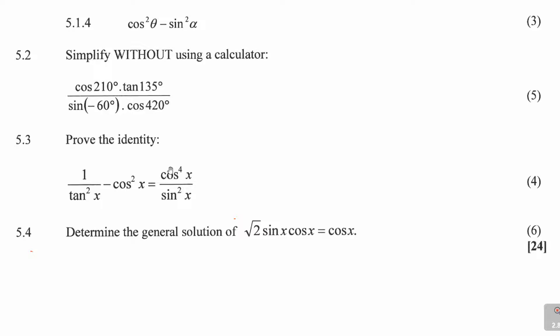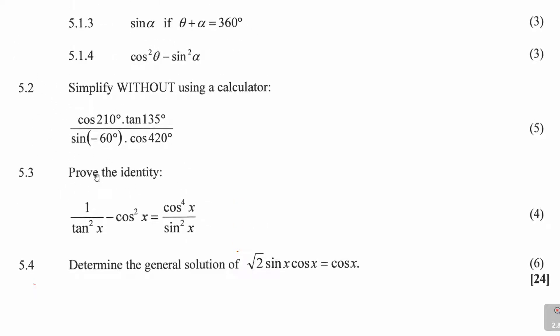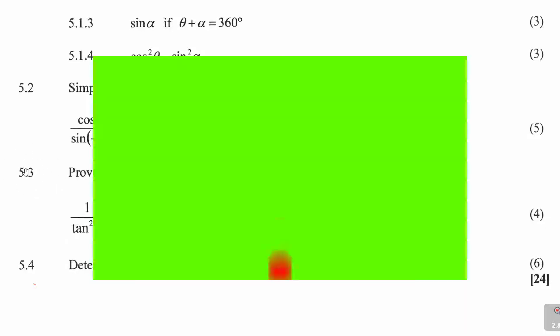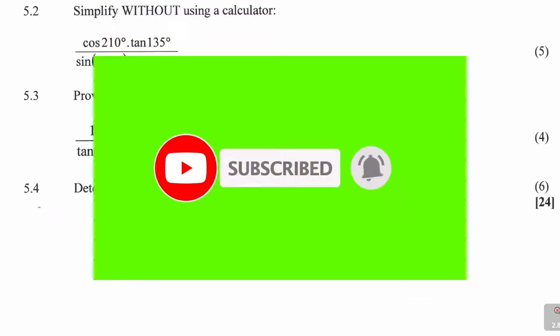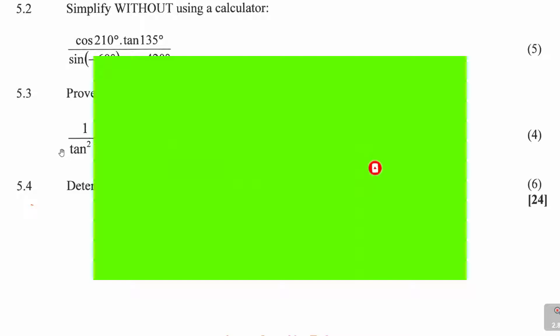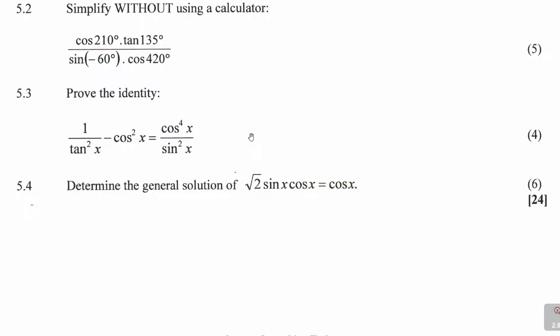So now I'm going to look at 5.3. We are proving this identity. Now again, I say if you're coming in for the first time, I have already done 5.2. Now you need to look at the video previously. It says we need to prove the identity. It's given here: 1 over tan squared x minus cos squared x is equal to cos to the power of 4 x over sin squared x.